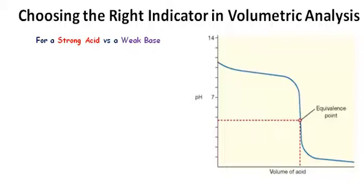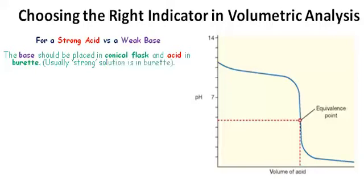Now if we look at a strong acid versus a weak base, the base should be placed in the conical flask and the acid in the burette. Usually the strong solution is placed in the burette.